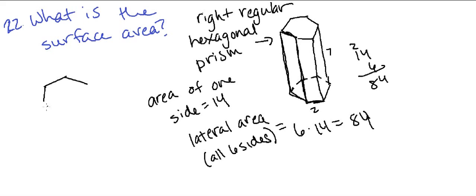I'm going to redraw the hexagon here. Since this is a right regular hexagonal prism, we know that each of the sides is going to be 2. I don't remember the formula for a hexagon off the top of my head, so I'm going to go back to what I do know and break this down into shapes that I know the area of.